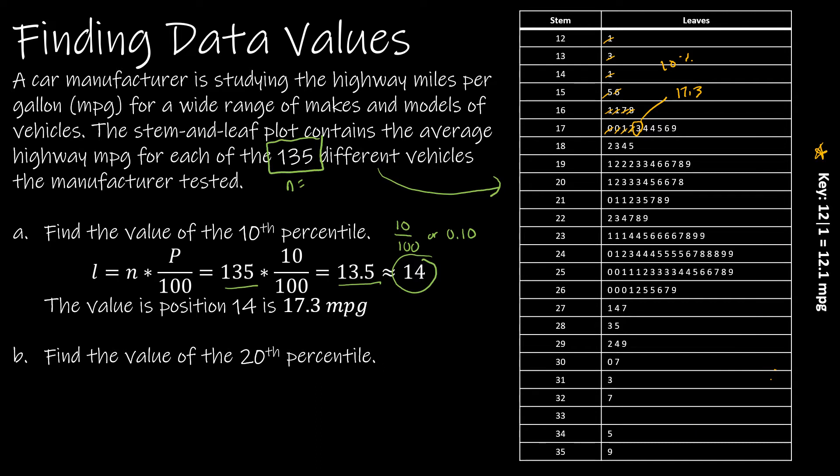Now let's look at the 20th percentile. I'm doing the exact same thing, except 10 is going to become 20. This time I get a whole number, 27. On the first one, I rounded to 14 and took the one in that position. Now, if I get a whole number, I'm going to find the 27th and the 28th value and average them.